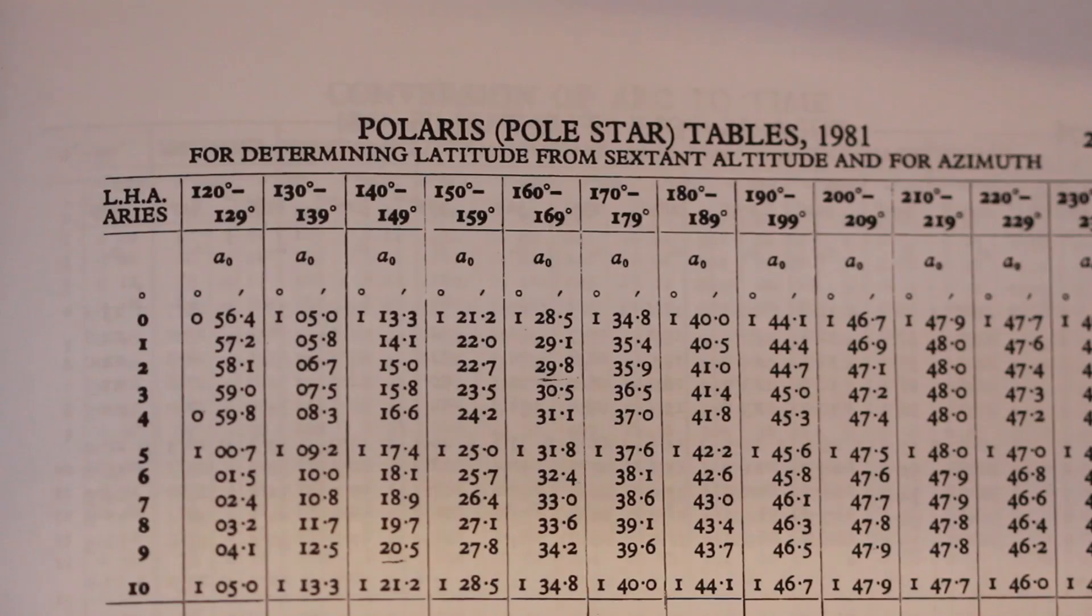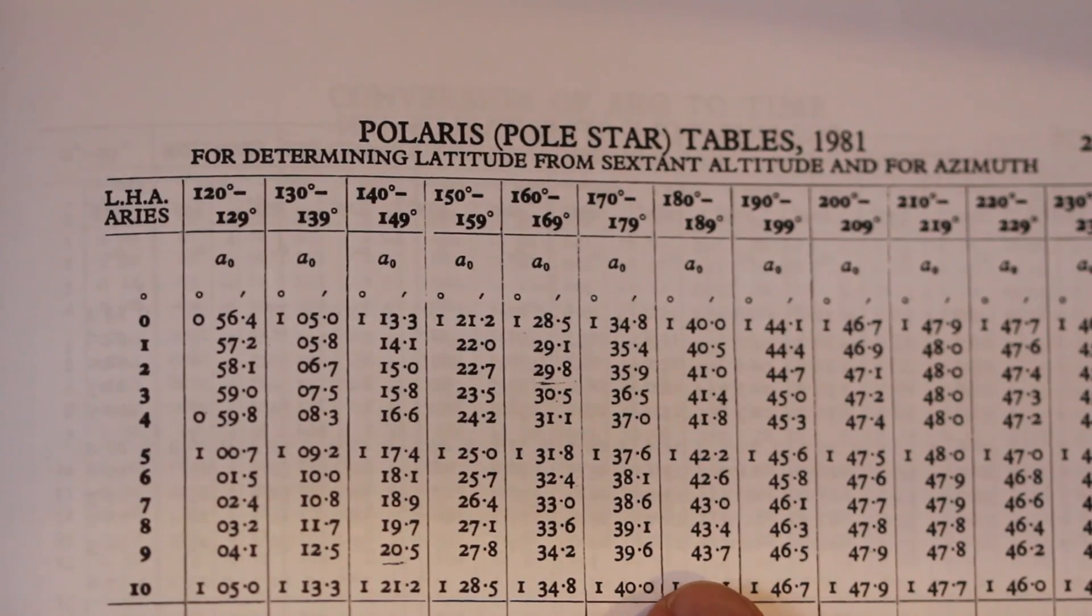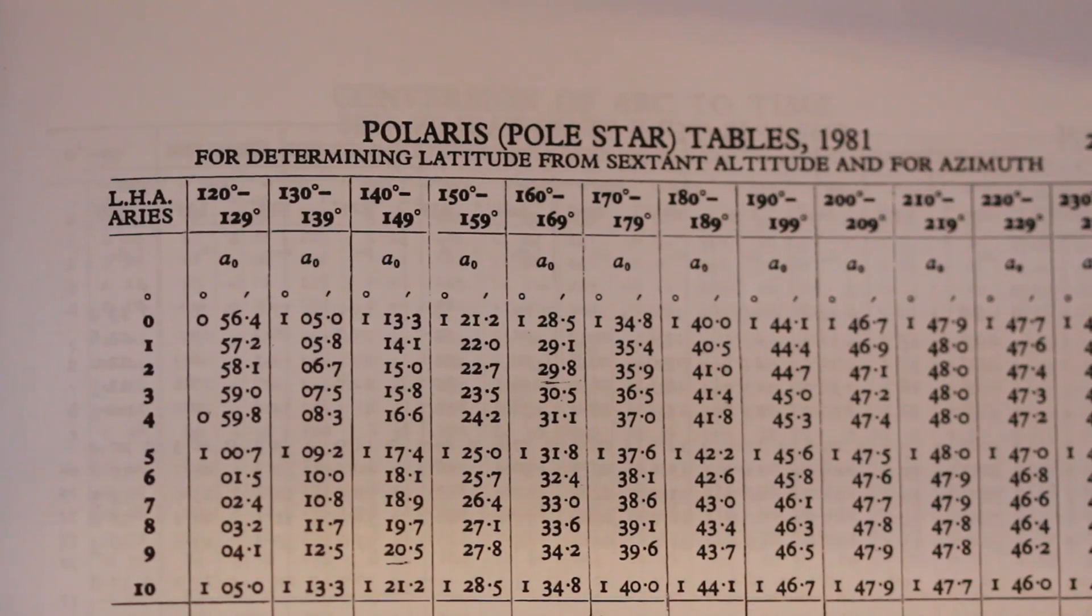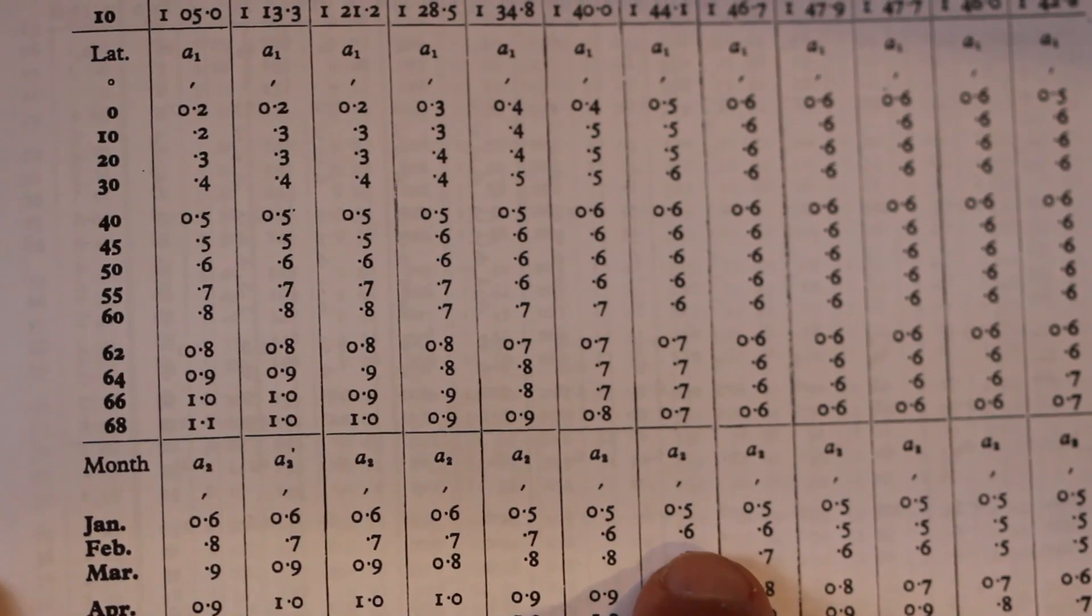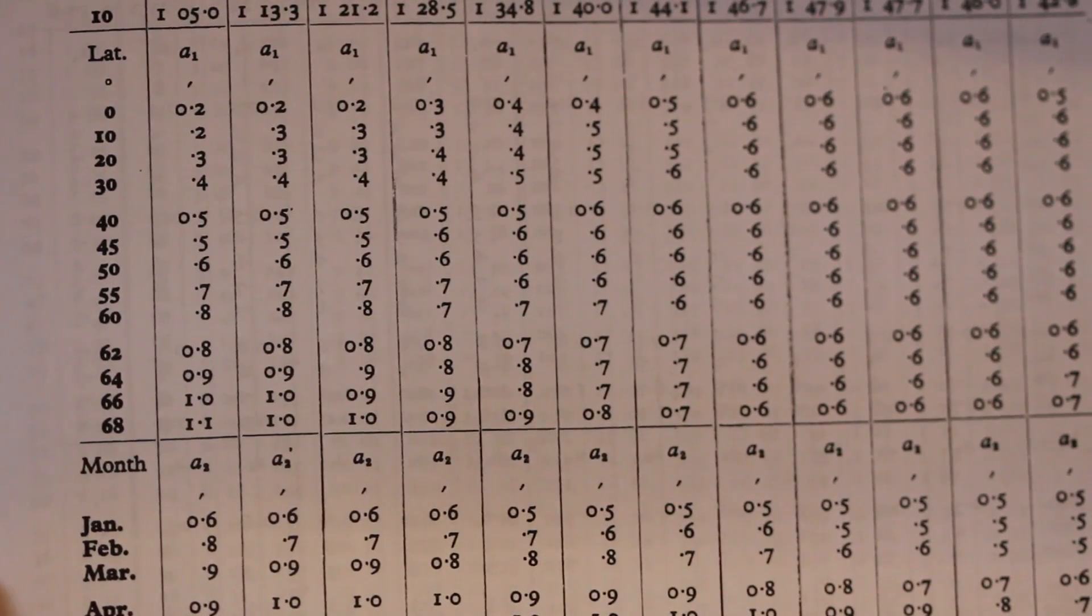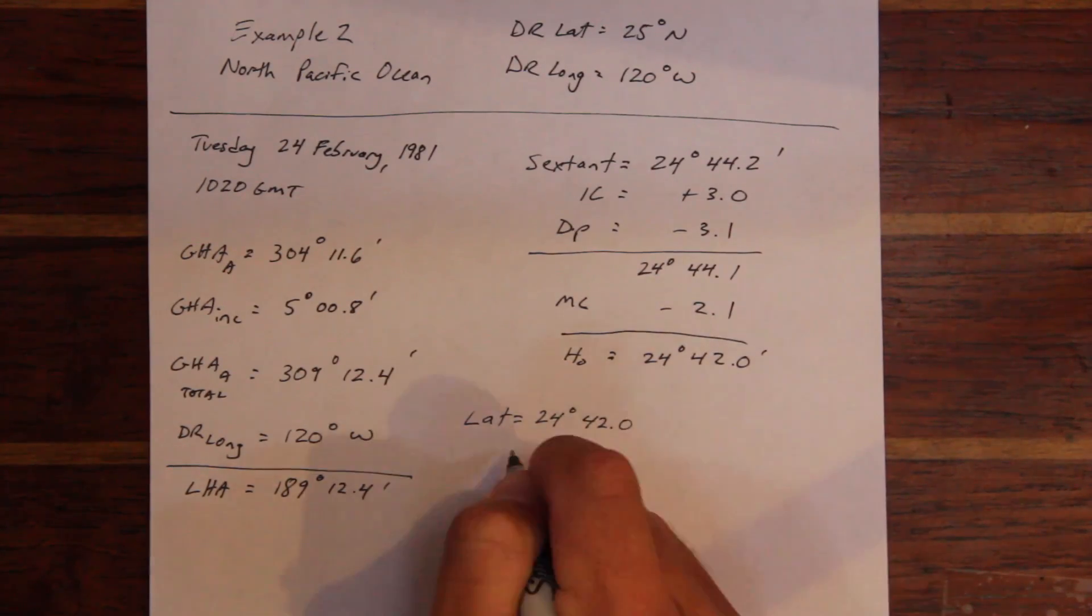Next, we enter the Polaris tables with the LHA of Aries and determine our three corrections, A0, A1, and A2. The A0 correction needs to be slightly interpolated. All that's left is to determine our latitude by applying the three corrections to our observed altitude.